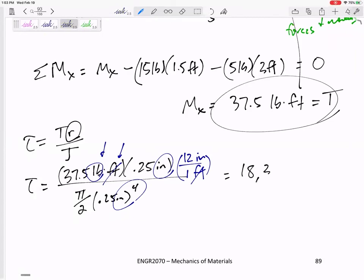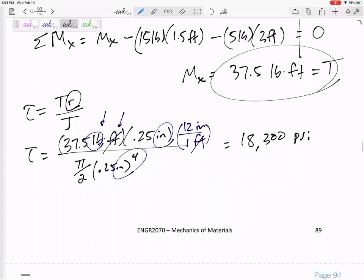And so this would be 18,300 psi, 18.3 ksi. All right, so if you want to know the shear stress or the torsional stress, right, the stress caused by torsion, first you got to find that T, that torque T, and then Tr over J. All right, Tr over J. Let's look at the next one.